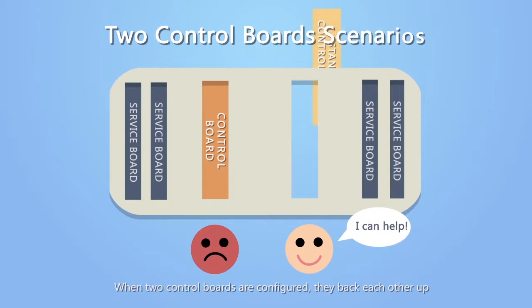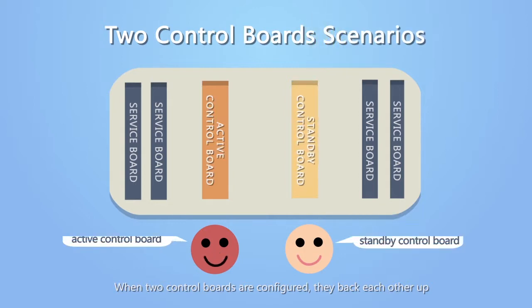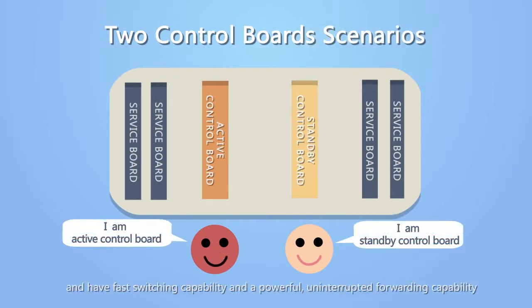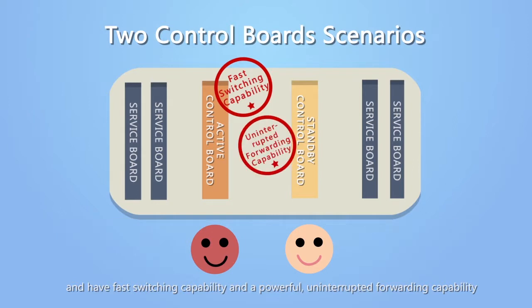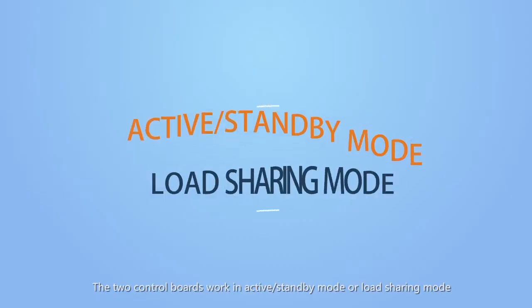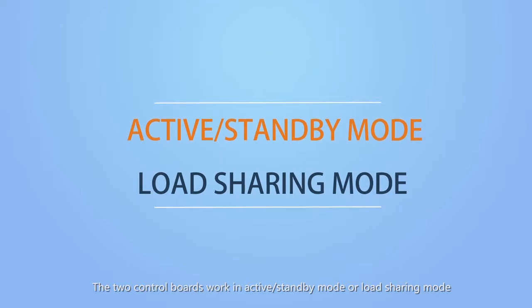When two control boards are configured, they back each other up and have fast switching capability and a powerful uninterrupted forwarding capability. The two control boards work in active standby mode or load sharing mode.